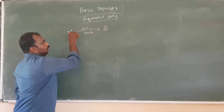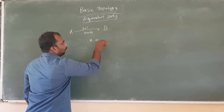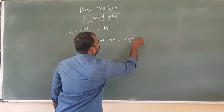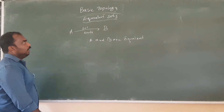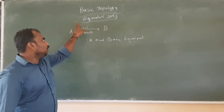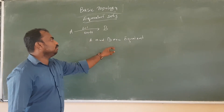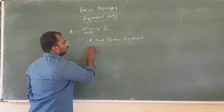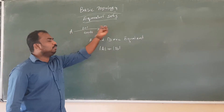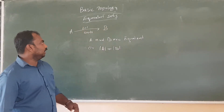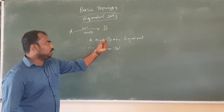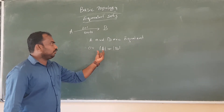A and B are said to be equal if there is a one-to-one correspondence between them. We call this a bijective function, and it means the cardinality of A is equal to the cardinality of B.